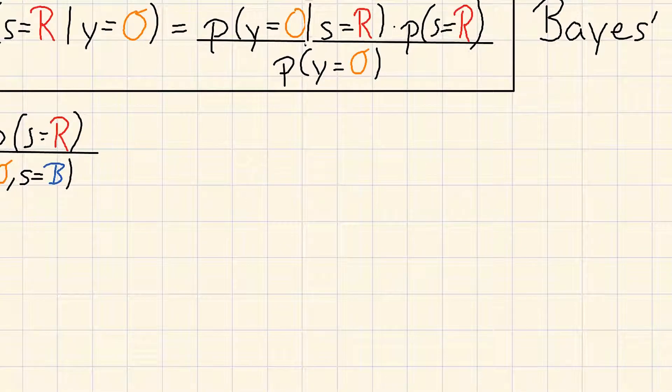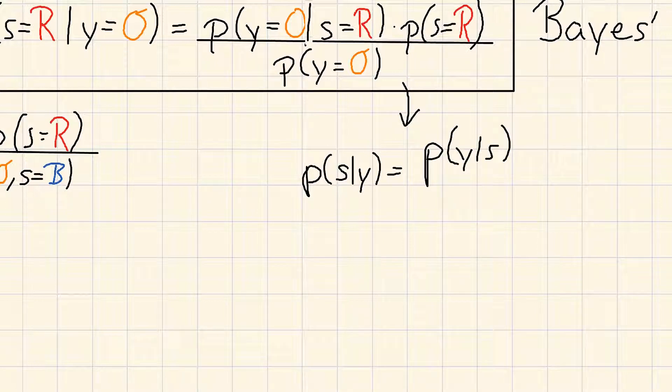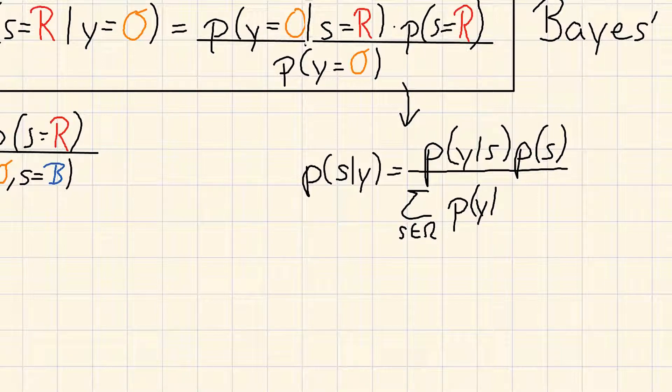So, one form of Bayes' rule would be p of s equal to p of y given s times p of s divided by the sum of s is element of omega of p of y given s times p of s. And here you really see in order to get the one conditional probability you only need the other conditional probability and the total probability which is also called marginal probability.